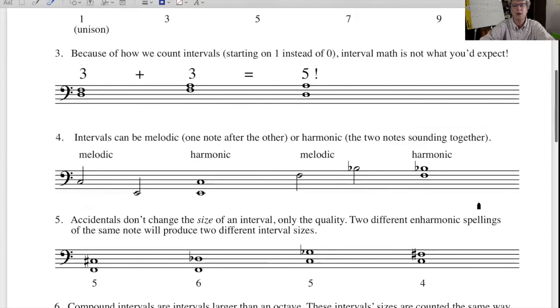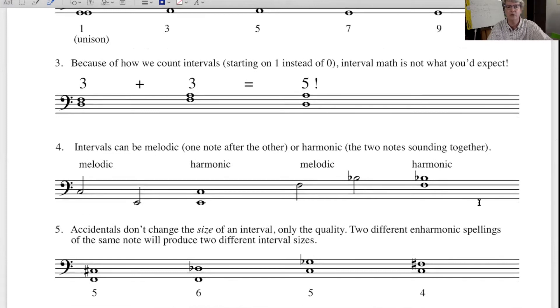Just a word of warning. Because of how we count intervals, starting on the one instead of starting on the zero, the math of adding up intervals is not at all what you would expect. So let's take the interval from D to F. That's a third. And now let's add another third to it. We go from F up to A. And so to figure out the spanning interval from D up to A, that will be a fifth. Yes, it is true that in music theory math, at least in interval math, a third plus a third is a fifth, not a sixth.